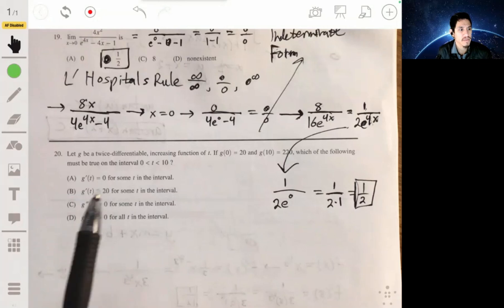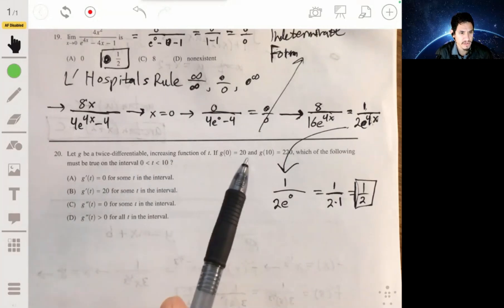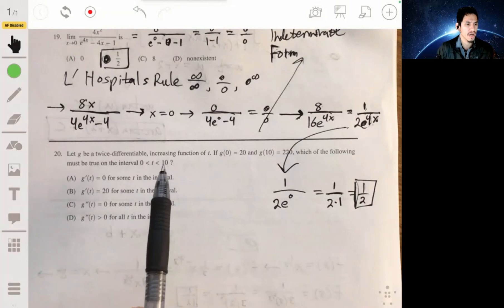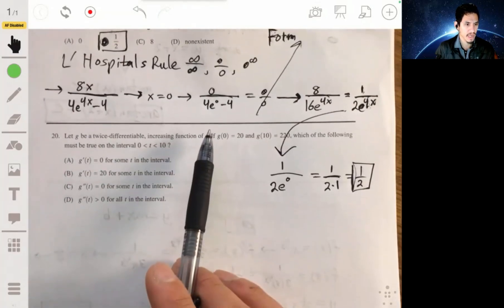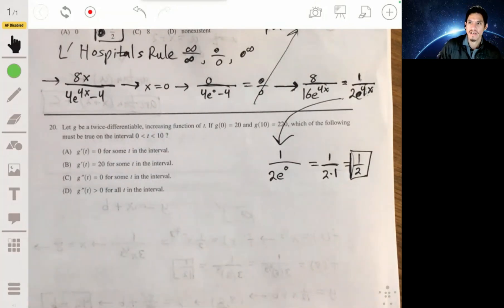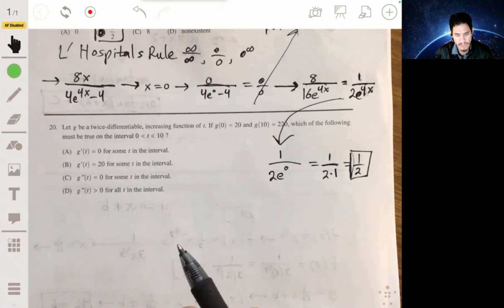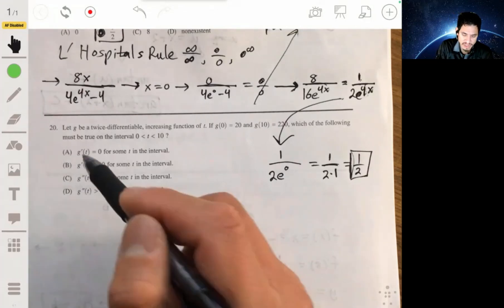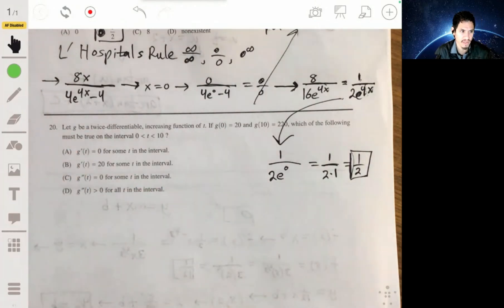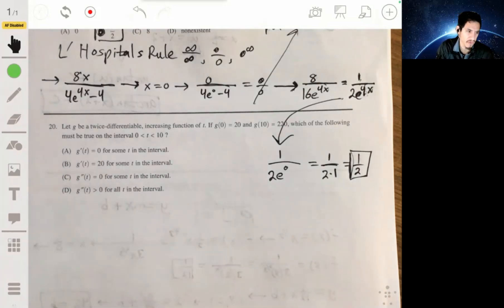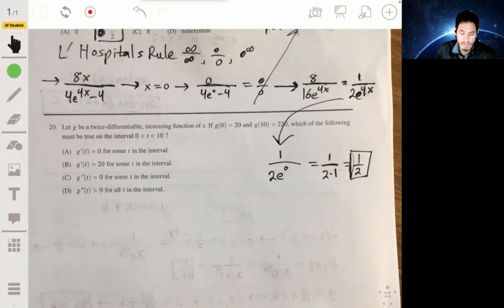Alright, number 20. We have G that's going to be a twice-differentiable increasing function. And we're told that if G of 0 is 20 and G of 10 equals 220, which of the following must be true on the interval from 0 to 10. Now, these types of problems, I would usually look for a theorem, like one of the theorems that your professor or teacher will usually tell us are important. Like squeeze theorem, mean value theorem, intermediate value theorem, average value theorem, something like that. Because usually that's what they're getting at.